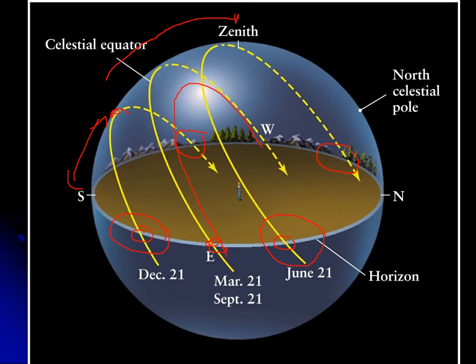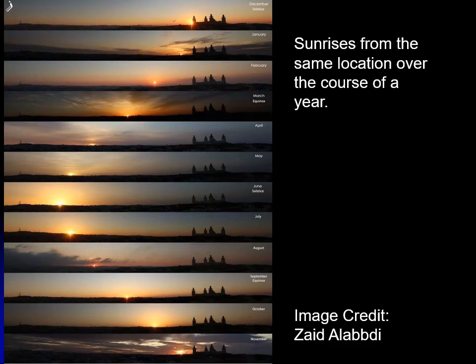In the summertime you actually get a little sunlight at sunrise and sunset on the northern face of a building. You can notice that the Sun shines into windows differently at different times of year — this is all due to the tilt of the Earth and its annual motion around the Sun.